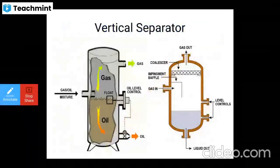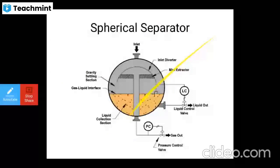The vertical separator shows oil mixture and gas inlet, oil level control, gas separation at the top, a coalescer, impingement baffle, and liquid separated at the bottom. The spherical separator shows a gravity settling section, gas-liquid interface, inlet diverter, mist extractor, liquid collection section at the bottom, pressure controller, and pressure control valve. Gas and liquid are taken out separately from the spherical separator.